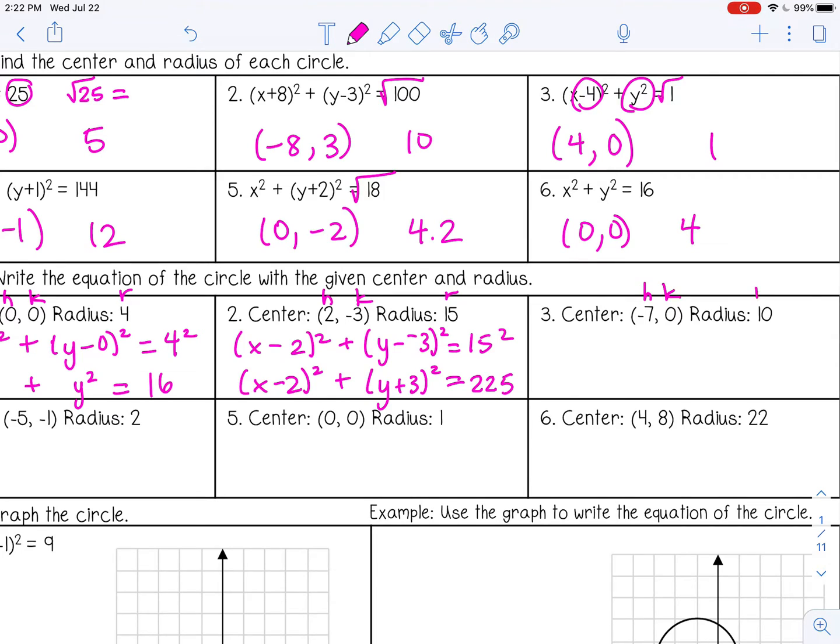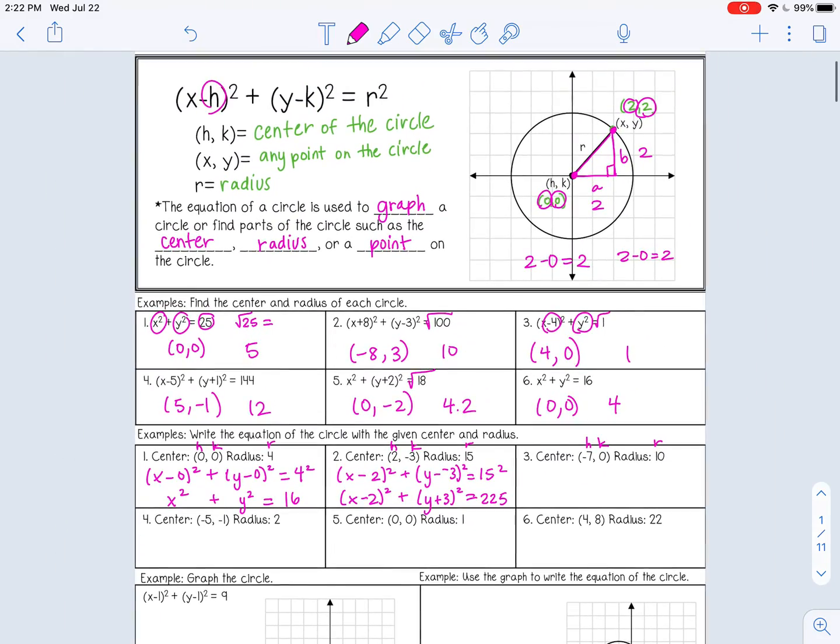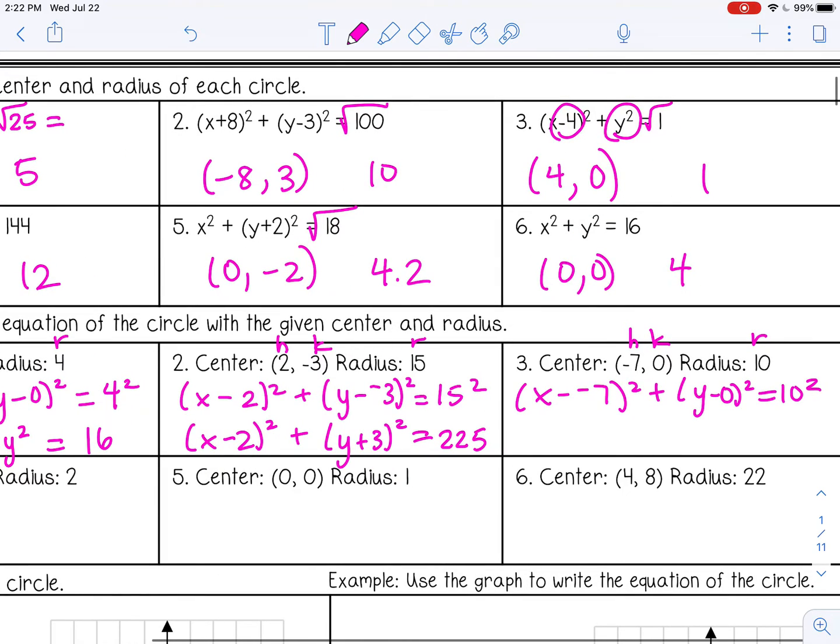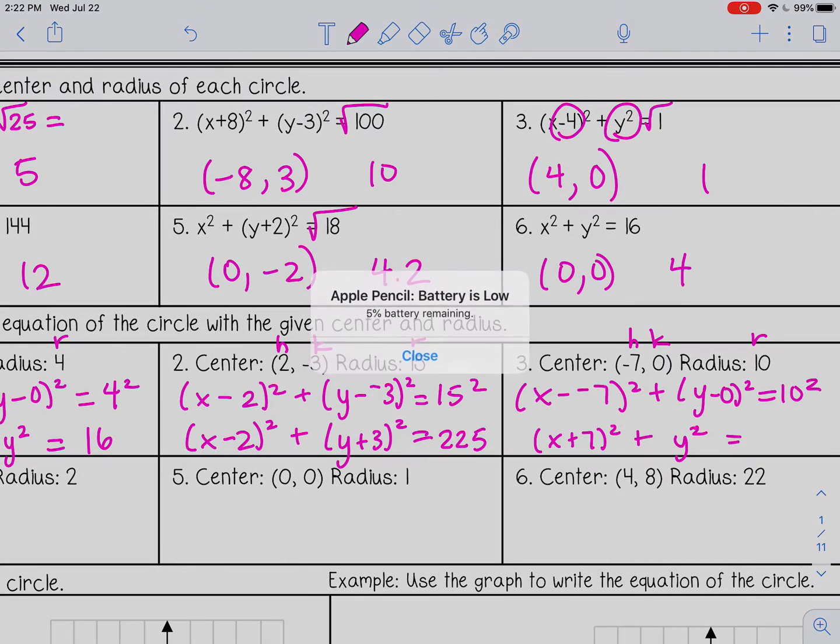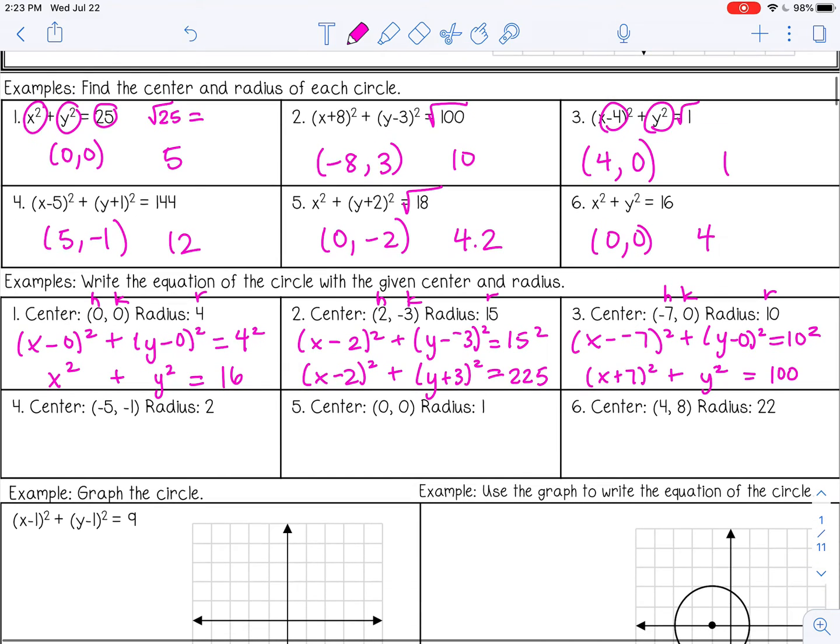All right, let's try one more together. So h, k, and r. All right, so x minus negative 7 squared plus y minus 0 squared equals 10 squared. And then we can simplify here. X minus negative 7, that's x plus 7. Y minus 0, that's just y squared equals 100. All right, pause the video now and try 4, 5, and 6 by yourself.